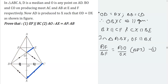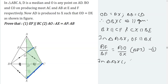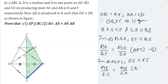Now consider triangle AXC on the other side. Here OE is parallel to XC, as proved above. So by BPT applied to triangle AXC, we get AE over EC equals AO over OX. This is equation 2.